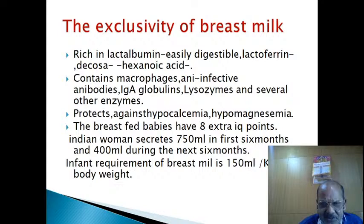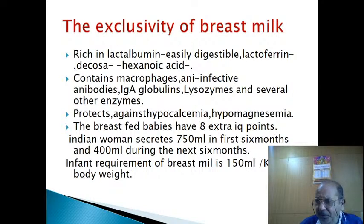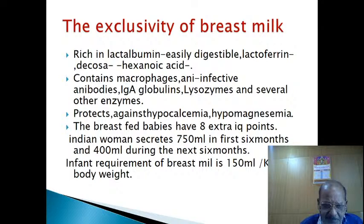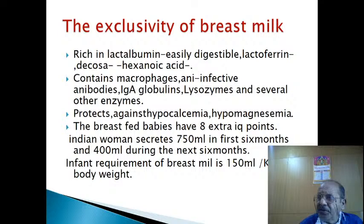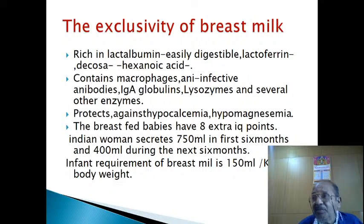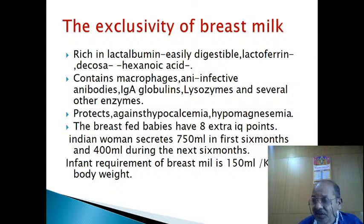Breast-fed babies have eight extra IQ points. Indian women can secrete 750 ml in the first six months and 400 ml during the next six months. The infant's requirement of breast milk is 150 ml per kg of body weight. At six months, when the child weighs around 6 kg, the requirement is 900 ml, but mother can supply at most 750 ml, leaving a nutrition gap of 150 ml. That is why we advocate introduction of semi-solid foods.